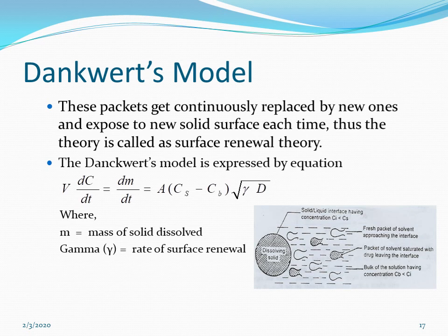The Danckwerts model is expressed by the equation: V × dC/dt = dm/dt = A(Cs − Cb)√(γD), where m is the mass of solid dissolved and γ is the rate of surface renewal.